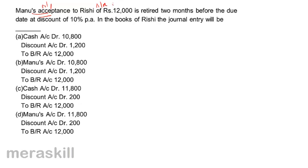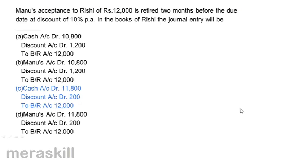The amount of rebate involved is 10 percent of 12,000 for two months, which equals 200. So the amount received by Rishi would be 11,800. The entry would be: cash account debit 11,800, discount account debit 200, to bills receivable 12,000. Correct answer: option C.